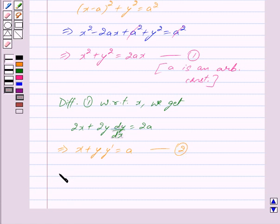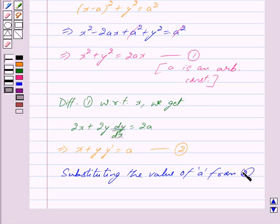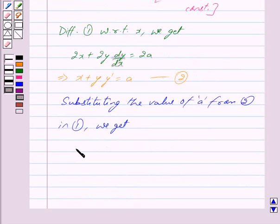Now, substituting the value of a from equation 2 in equation 1 we get x² + y² is equal to 2x(x + yy').